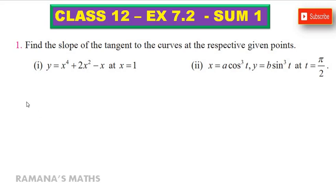Hello students, I am Ramanan. In this video for class 12, exercise 7.2, we will learn sum number 1. First subdivision: given y is equal to x power 4 plus 2x square minus x at x equal to 1, find the slope of the tangent to the curves at the respective given points.